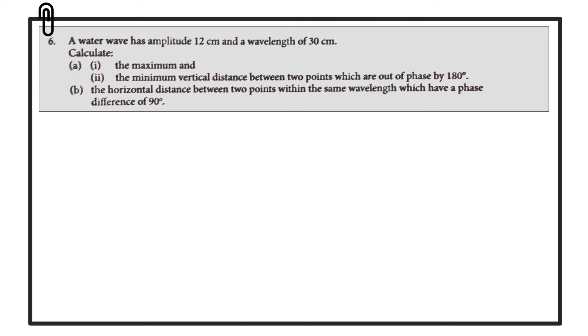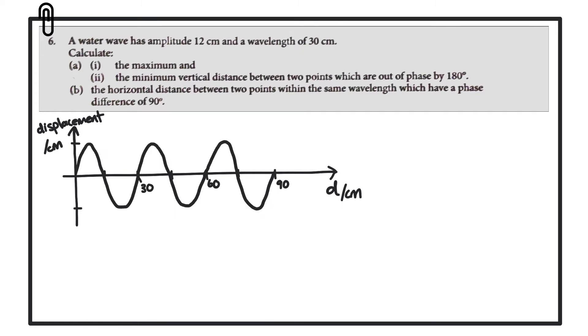The first thing we'll do is to just sketch out this wave and we'll add some values onto the axis. On the axis here we have displacement on the y-axis and you'll notice there that we have a maximum and a minimum value of 12 centimeters because that's the amplitude of the wave, and then we have distance on the x-axis and one wavelength is 30 centimeters.